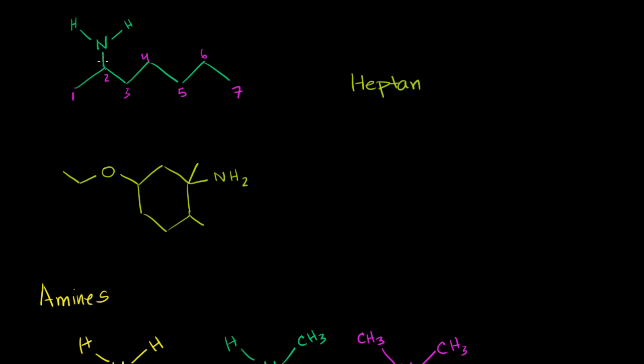So we would then say on the two carbon, on the two carbon right over here, we have the amine group. So it's heptan-2-amine. And we're done. We know that we have an amine group on the two carbon.